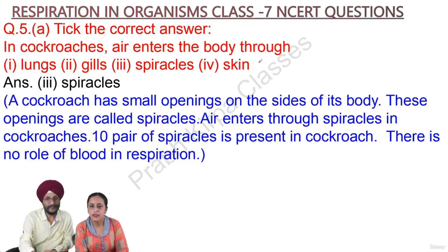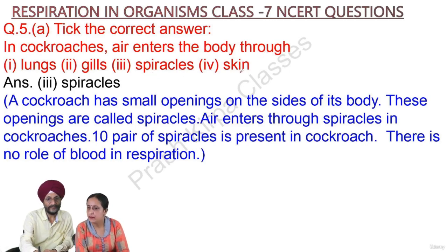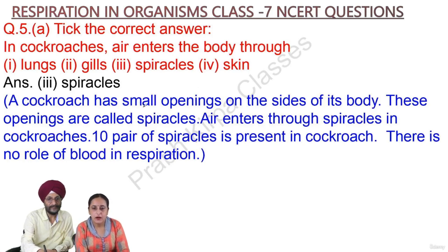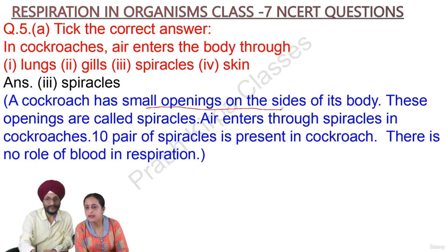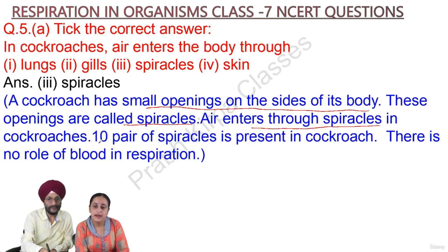Next question: In cockroaches, air enters the body through — 1. lungs, 2. gills, 3. spiracles, or 4. skin? The answer is spiracles. A cockroach has small openings on the sides of its body called spiracles. Air enters through these spiracles in cockroaches.